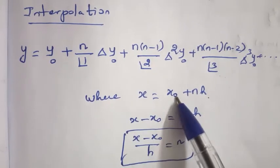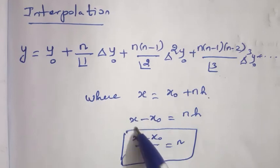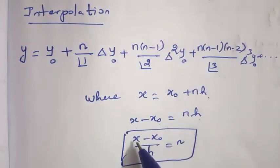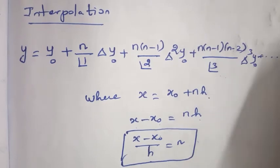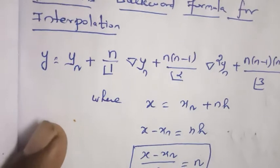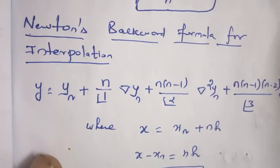X minus X naught can be taken, X minus X naught equal to N H. So, X minus X naught by H equal to N. This is the formula for Newton forward.